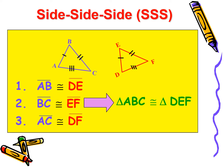The first one is Side-Side-Side, or SSS. If we have two triangles ABC and DEF, AB is congruent to DE — because it is given, as obviously drawn in the diagram. BC is congruent to EF, given. And AC is congruent to DF, given. Therefore, since we have Side-Side-Side congruence, we conclude that triangle ABC is congruent to triangle DEF.